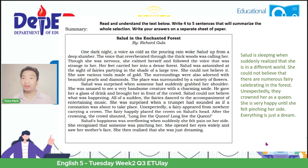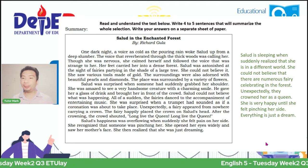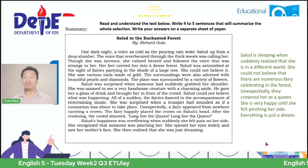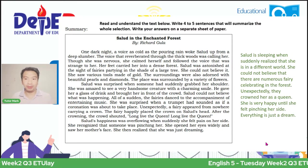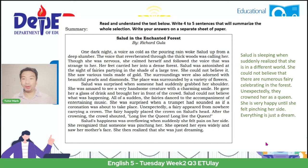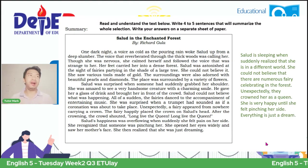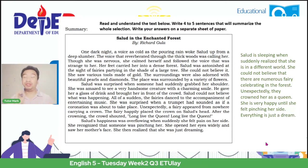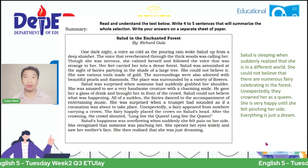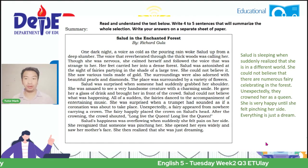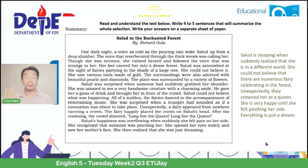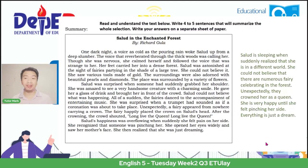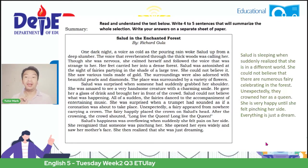And when we look at this concept, it can form into a summary. And this is the possible answer: 'Salud is sleeping when suddenly she realized that she is in a different world. She could not believe that there are numerous fairies celebrating in the forest. Unexpectedly, they crowned her as a queen. She was very happy until she felt pinching on her side. Everything is just a dream.' So this example is the summary. If you look at it, that is how we can make a summary or summarize a long context—even in just four to five sentences, we can do it if we have comprehension and retention of information.